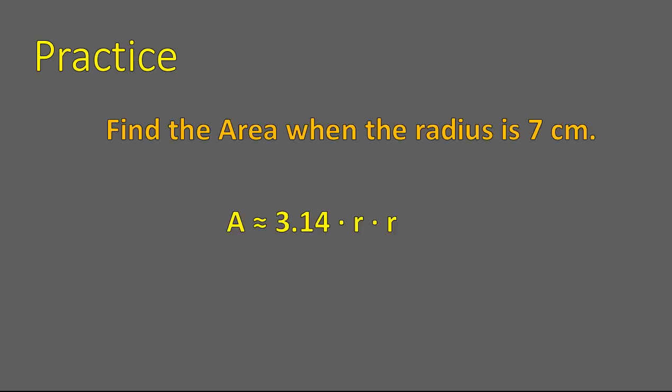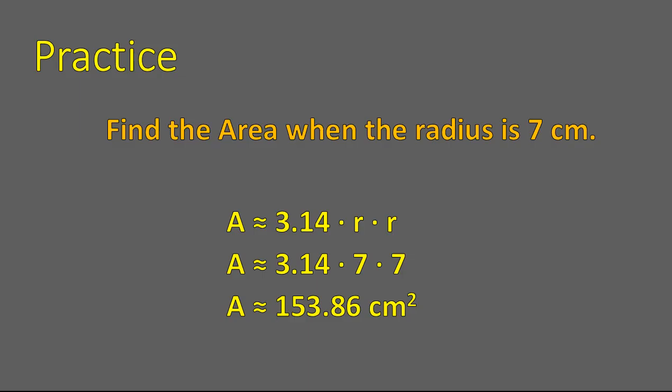Now it's time for you to practice. Go ahead and calculate the area when the radius is 7 centimeters — your number is a little nicer to work with. If you solved that, you plug 7 in where you see the radius, radius times radius, and you get 153.86 square centimeters. That's how you find the area of a circle.